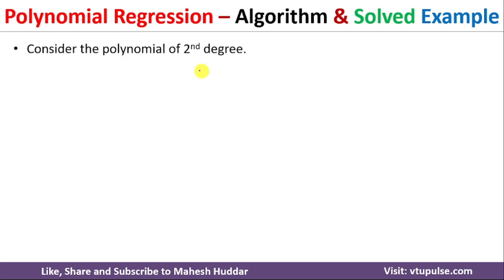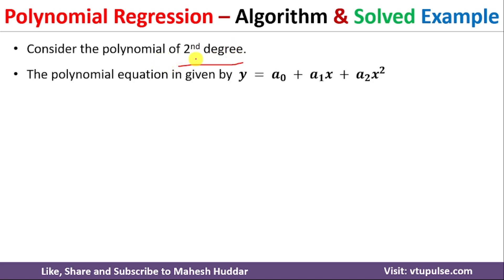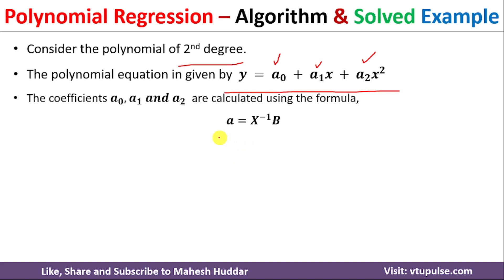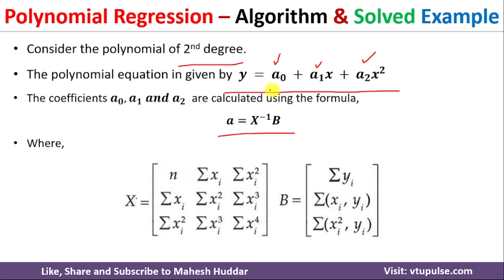Let us consider a polynomial of degree 2 and understand how polynomial regression works. For degree 2, the equation is y = a0 + a1x + a2x². The question is how to calculate these three coefficients a0, a1, and a2, where x is the independent variable and y is the dependent variable. The values of a0, a1, and a2 are calculated using the formula a = X⁻¹ · b. X is a 3×3 matrix because we have three coefficients.